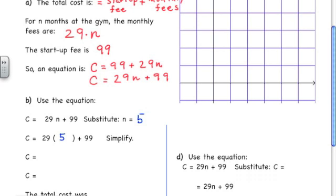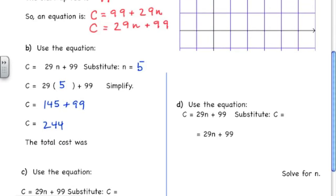So we're going to get 29 times 5 plus 99. 29 times 5 is 145, plus 99. Add those two numbers together, we're going to get 244. So when Kareem uses the gym for five months, his total cost is going to be $244.